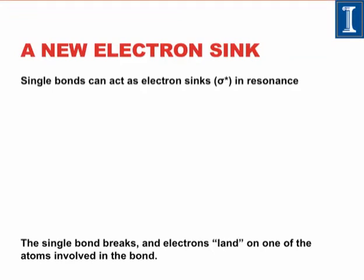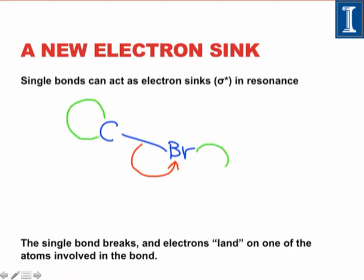Single bonds can act as electron sinks in nontraditional resonance forms. As a quick example in the context of an isolated carbon-bromine bond: in curved arrow terms, we could draw a nontraditional resonance structure involving the sigma star orbital of the carbon-bromine bond by breaking the carbon-bromine bond and giving the electrons to the more electronegative atom in the pair. In orbital terms, this is the sigma star orbital of the carbon-bromine bond, which looks like two large lobes of opposite phase on the outsides of the atoms. The lobe on carbon would be larger than the lobe on bromine, and two smaller lobes toward the center of the bond, again with opposite phases.